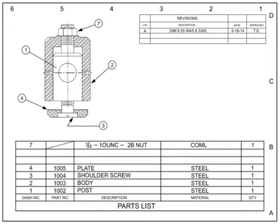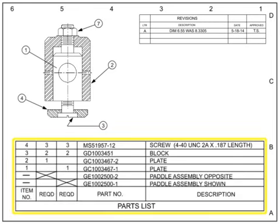Other useful information typically found in the parts list includes material, material specs, heat treatment requirements, size, weight, flag note indicators, and finishing processes. For drawings that show multiple configurations of an assembly, additional columns indicate the quantities of sub-components that make up each assembly. Shown is an example of a drawing with multiple assemblies. An X will indicate the appropriate quantity column per assembly.